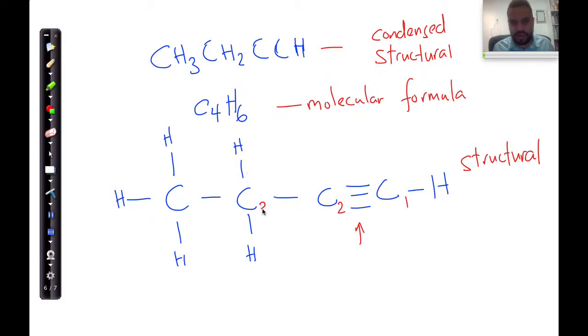And I'm going to number closest to that triple bond. So one, two, three, and four. And then I'm going to say four carbons in the main chain is but. There's at least one triple bond, so I need to put ine. And I know that the triple bond is on the first carbon, so it's but-1-ine.